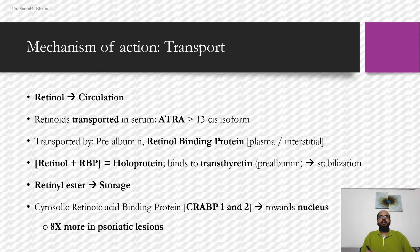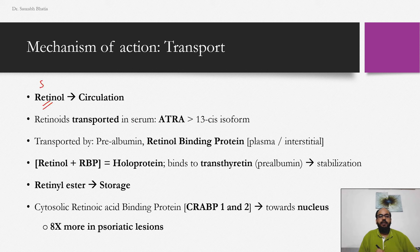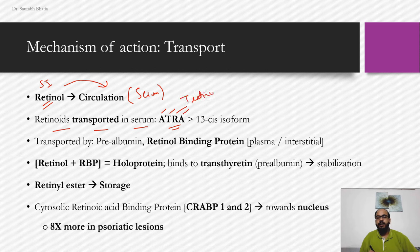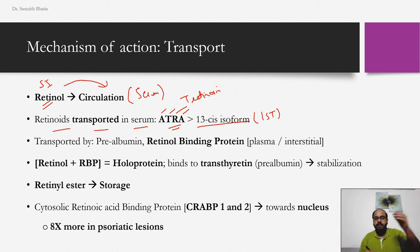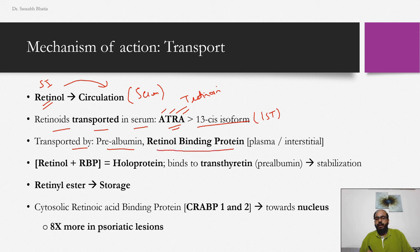Regarding transportation: retinol absorbed by the small intestine enterocytes goes into circulation. Retinoids are transported in serum in the form of ATRA — all-trans retinoic acid, or tretinoin — more than in the 13-cis form (isotretinoin). Retinols are transported by prealbumin and retinol binding proteins, which are specialized protein molecules that bind themselves to retinoids.